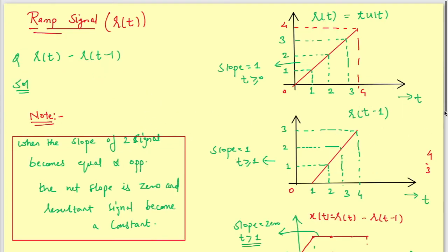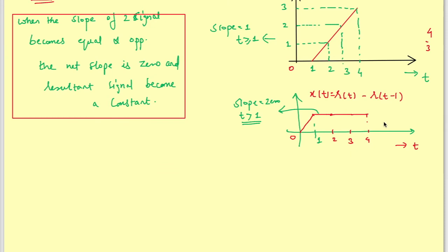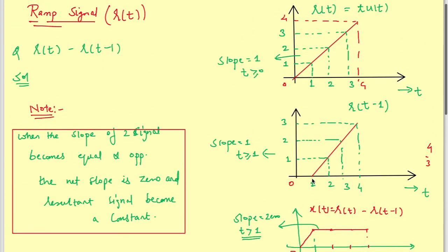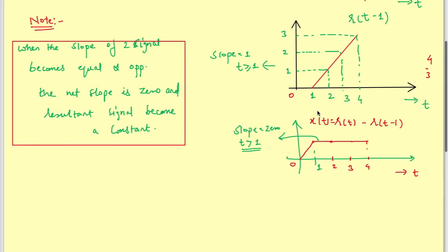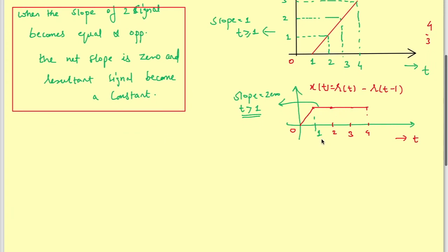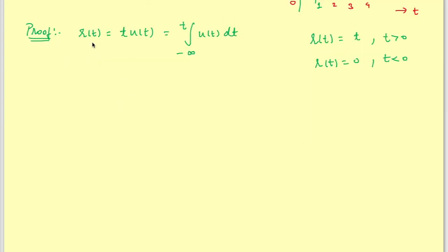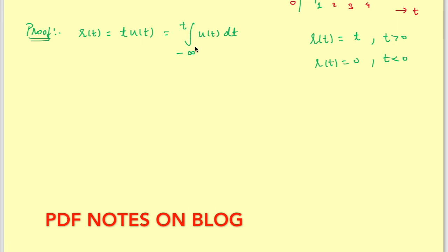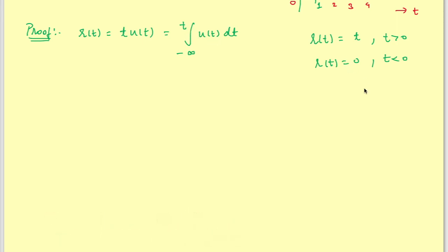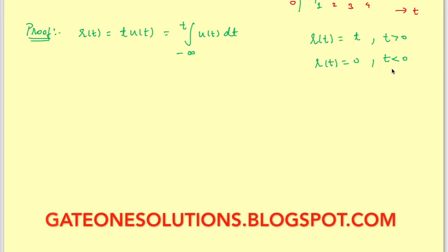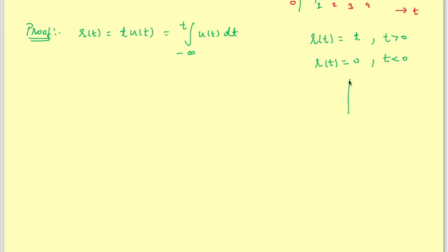From time t=1, the slope of both r(t) and r(t-1) is equal to 1. Since we are computing r(t) minus r(t-1), the net slope is 0 from t=1 onward. This leads us to the proof of the ramp signal: r(t) equals t·u(t), which means r(t) = t for t greater than 0 and r(t) = 0 for t less than 0.